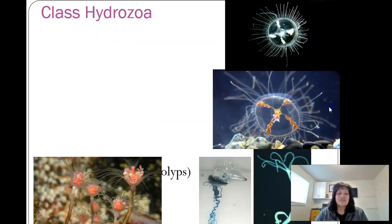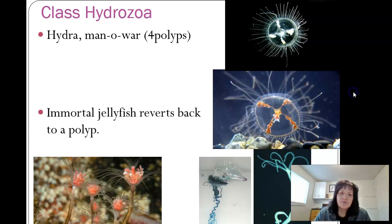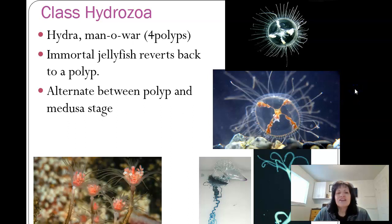Class Hydrozoa — these include the Hydras and Man of War, which really are four polyps put together. The immortal jellyfish is actually in here; it reverts back to a polyp and alternates between polyp and Medusa stage.